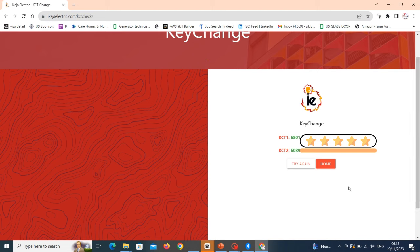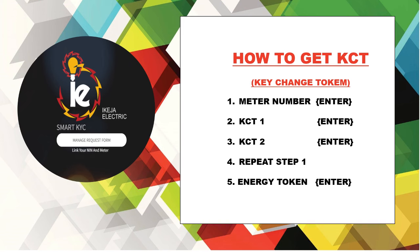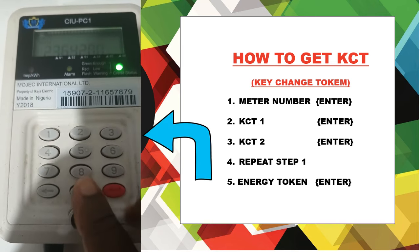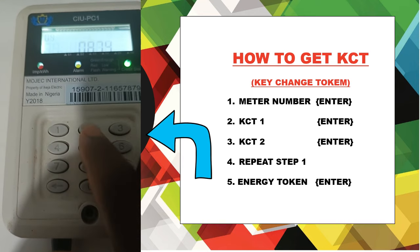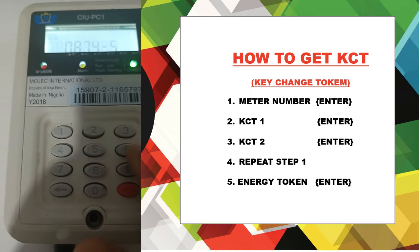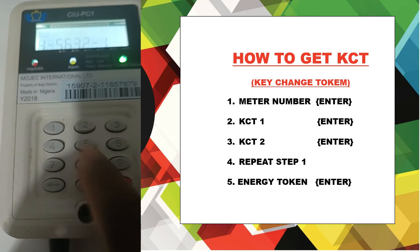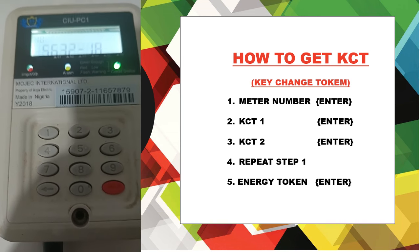The next thing is to get your customer interface unit. At this point, if your light has already gone off, you have to put a battery inside your customer interface unit. But if your light is still on, all you need to do is punch in your meter number first.